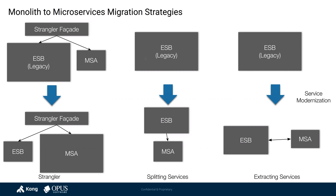The second strategy, in the middle, is called Splitting Services. In this case, the ESB is being consumed by your consumers, and your microservices run behind your ESB. Over time, you start to shrink your ESB infrastructure and replace services with proxies that call your brand new microservices architecture running on your new infrastructure.